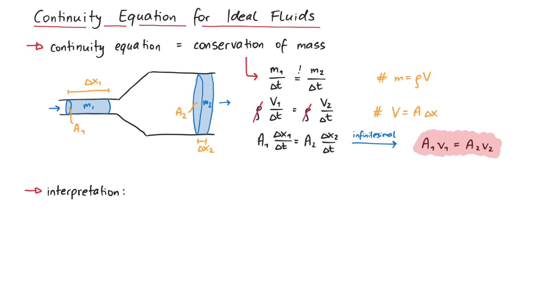The physical interpretation of the continuity equation is quite simple. It tells us that if the cross-sectional area in the tube increases, the fluid velocity will decrease. And if the cross-sectional area decreases, the fluid velocity will increase.